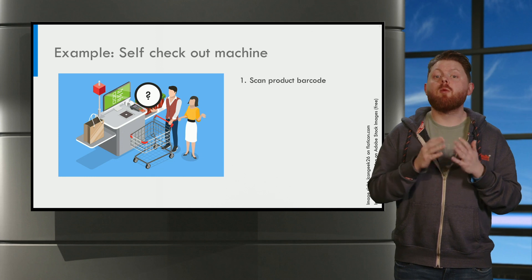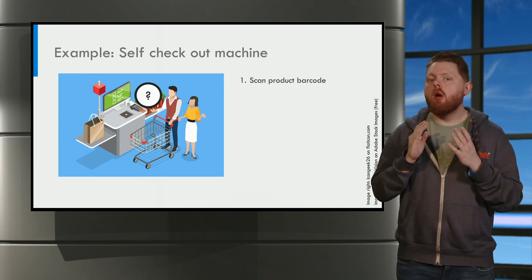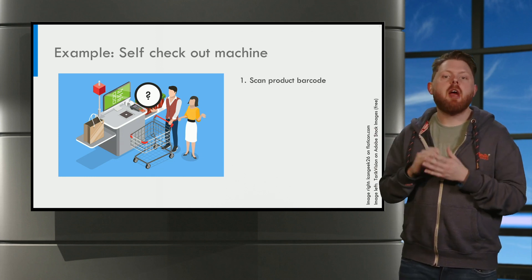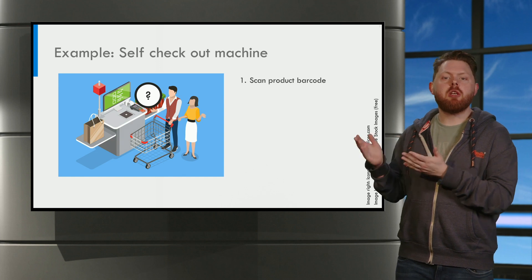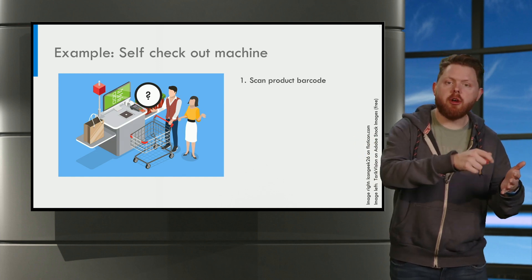The self-checkout works as follows. First you do your shopping and when you are done you go to the machine and you scan the barcode of your product.